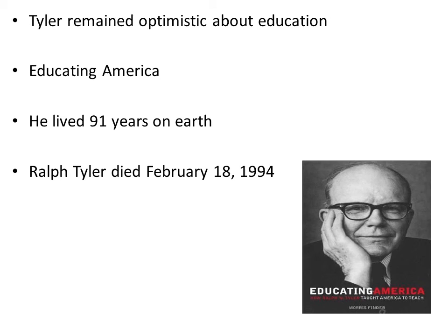Tyler remained optimistic about education despite challenges. His goal was to educate America — young children, teenagers, adults, and working professionals — about striving for excellence and achieving higher goals. He lived 91 years and led a successful life. Ralph Tyler died February 18, 1994. He considered himself the father of behavioral objectives, a concept he frequently used in asserting learning to be a process through which a person attains new patterns of behavior.